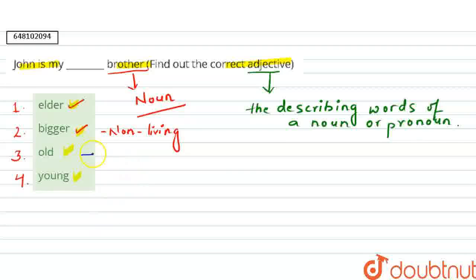And the third one is old. Old bhi age ko represent karne ke liye nahi hai ki unse bada hai. Aur agar yaha pe older hota then we can make it. But yaha pe old, this will also be wrong.